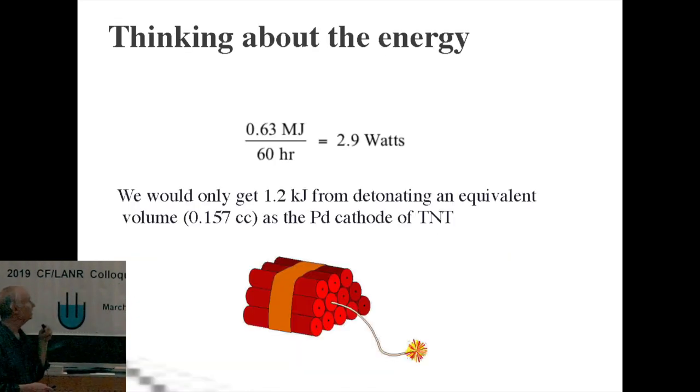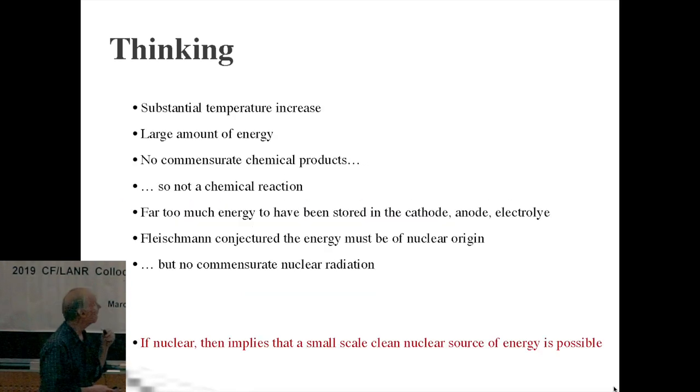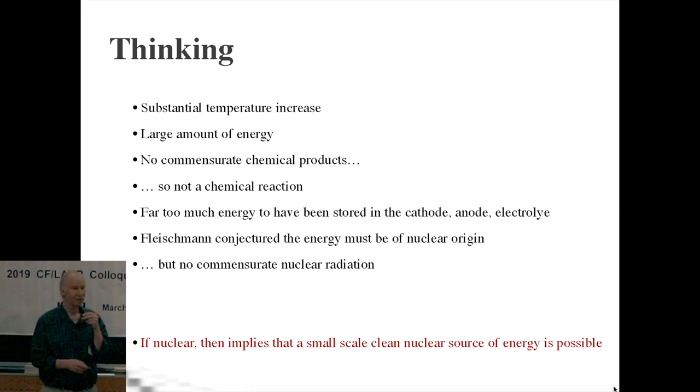This is from Fleischmann-Pons 1990 paper. The power excess is about a factor of 20. The amount of energy increase in this early experiment was on the order of a factor of two. Again, a little bit bigger than the percent effect claimed again and again by John Huizenga, one of the critics in the field. In terms of the energy, the amount of energy reported in this experiment was 0.63 megajoules. If you'd replace the volume of the palladium cathode by TNT and detonated it, you would've gotten 1.2 kilojoules, which is a small fraction of the total energy observed in this particular experiment. Okay, so lots and lots of energy, no commensurate chemical products, so Fleischmann conjectured they may have a nuclear effect.